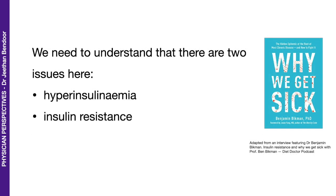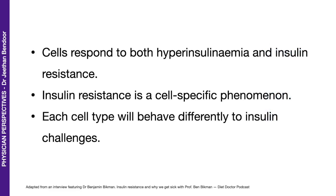We need to understand that there are two characters really when it comes to insulin resistance. There is hyperinsulinemia — that is, an increased amount of insulin in blood and tissue — and insulin resistance. So cells, pretty much every cell, respond to both hyperinsulinemia and insulin resistance. We also have to understand that insulin resistance is a cell-specific phenomenon, which means that every cell will react to this insulin challenge in a very different way.